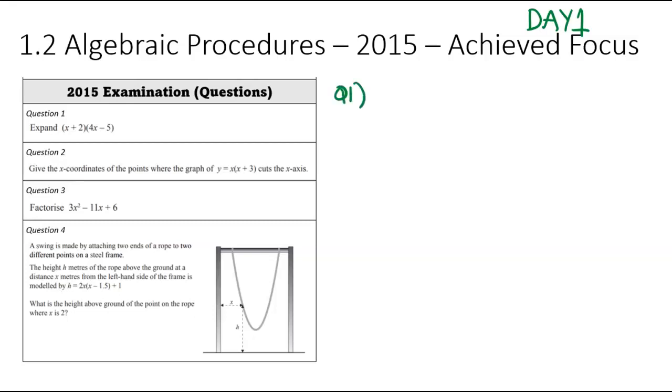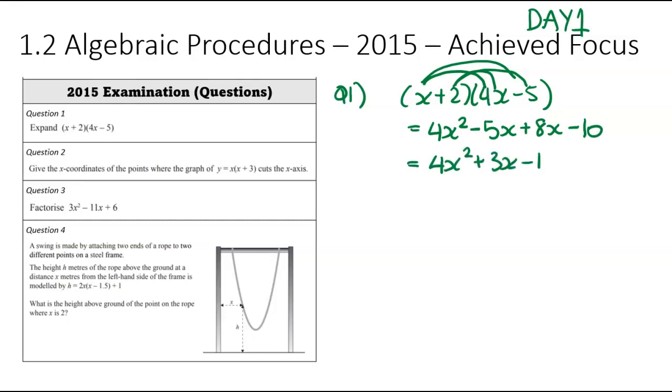So question number one, a nice easy one to get you going. We've got (x + 2)(4x - 5), and you've been asked to expand that. I'm going to use my rainbow method. x times 4x, that's going to get me to 4x². Then x times -5, that's -5x. Then 2 times 4x, so that's +8x. Then finally, 2 times -5, that's -10. I'm now going to group those terms in the middle together. The x terms: -5x + 8x, that's going to get me to 3x. So my final answer: 4x² + 3x - 10.